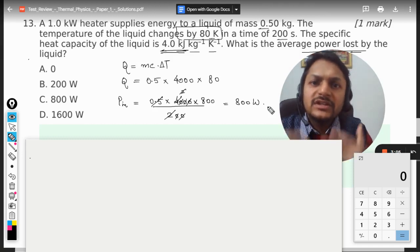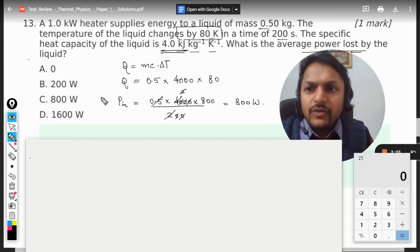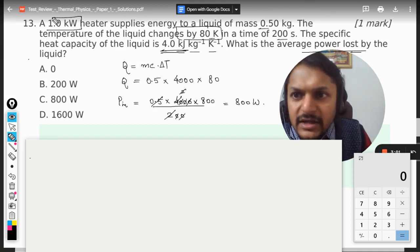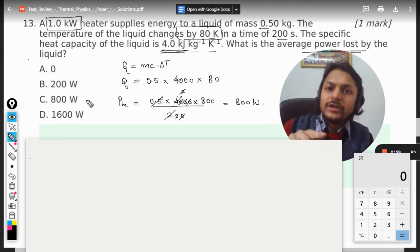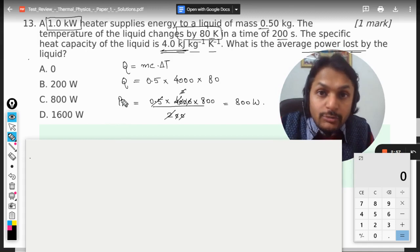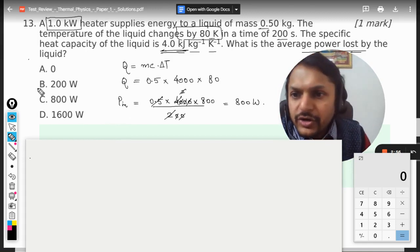What is the power that the heater supplied? One kilowatt. 800 has been used, so how much is the power lost? 200, and that is why the answer is 200.